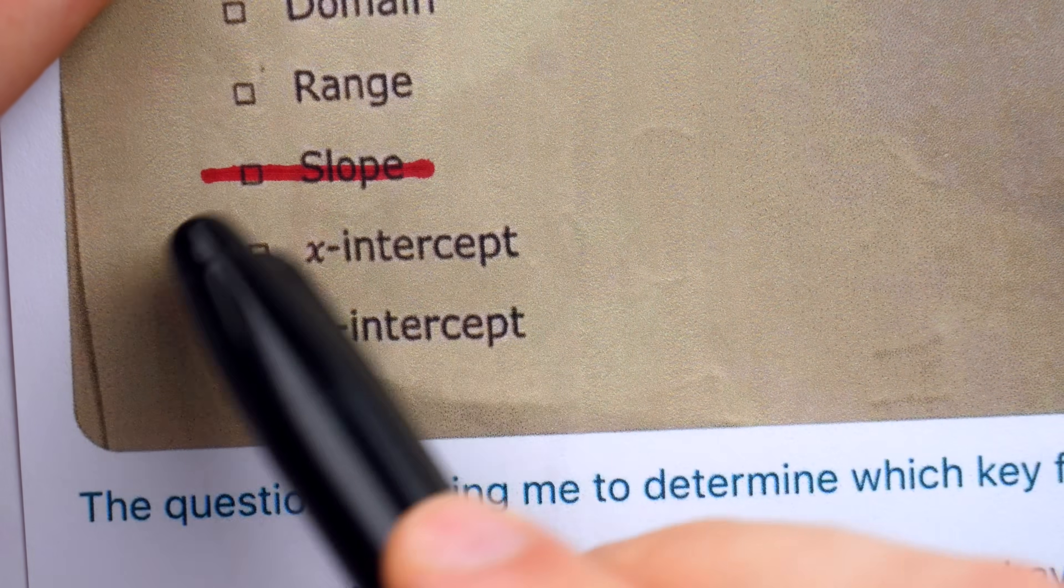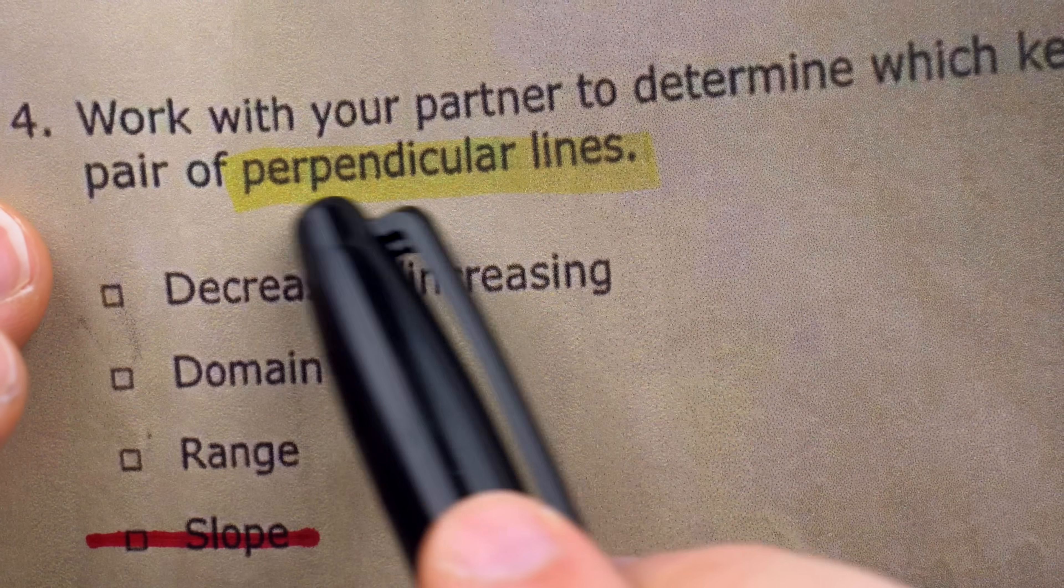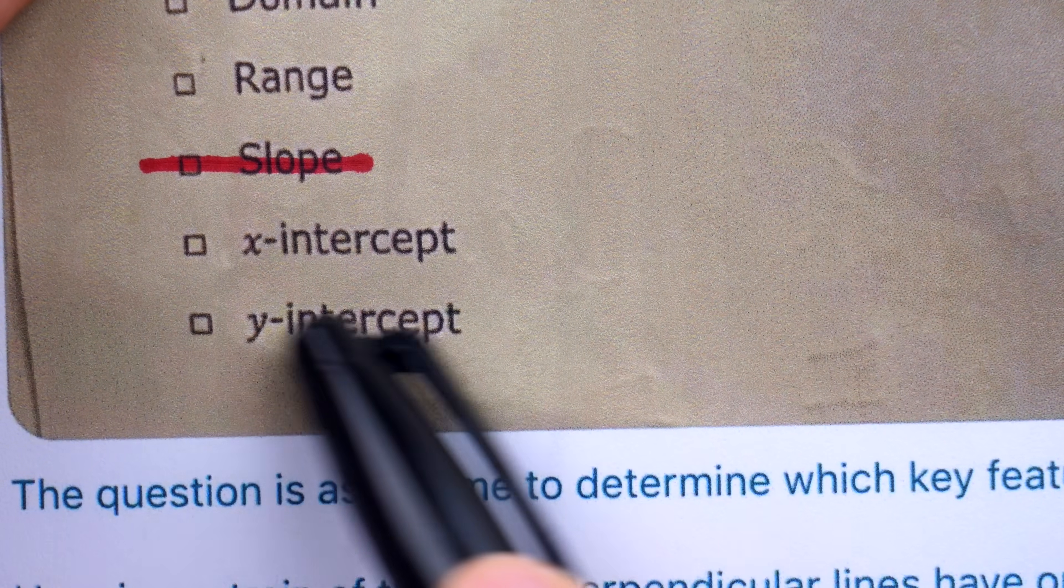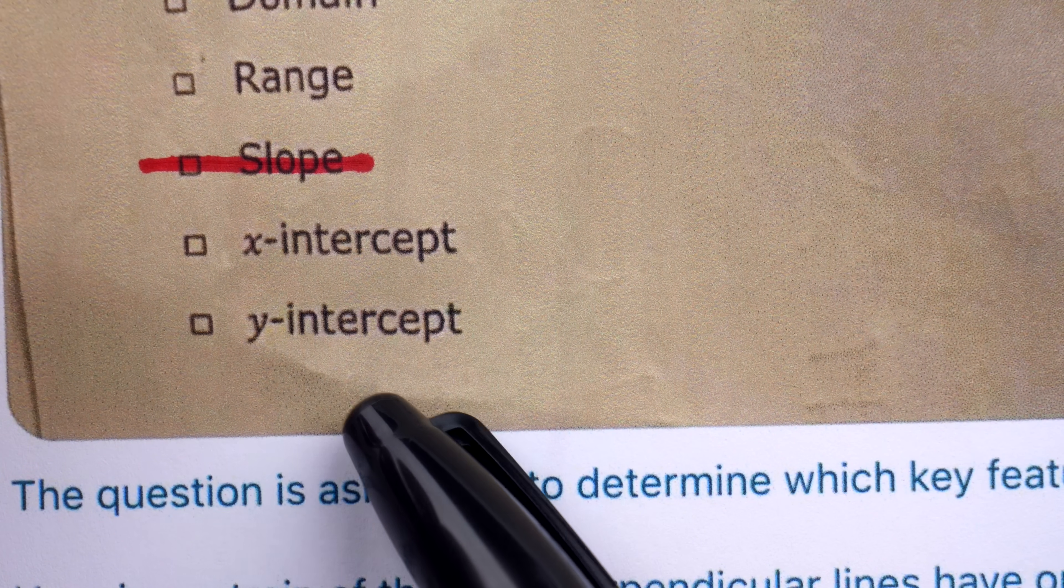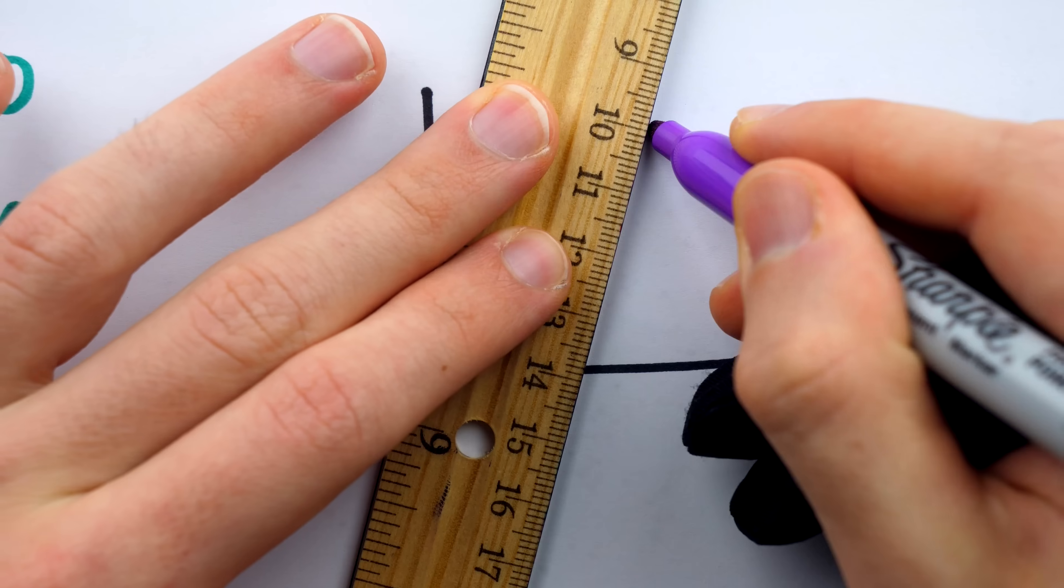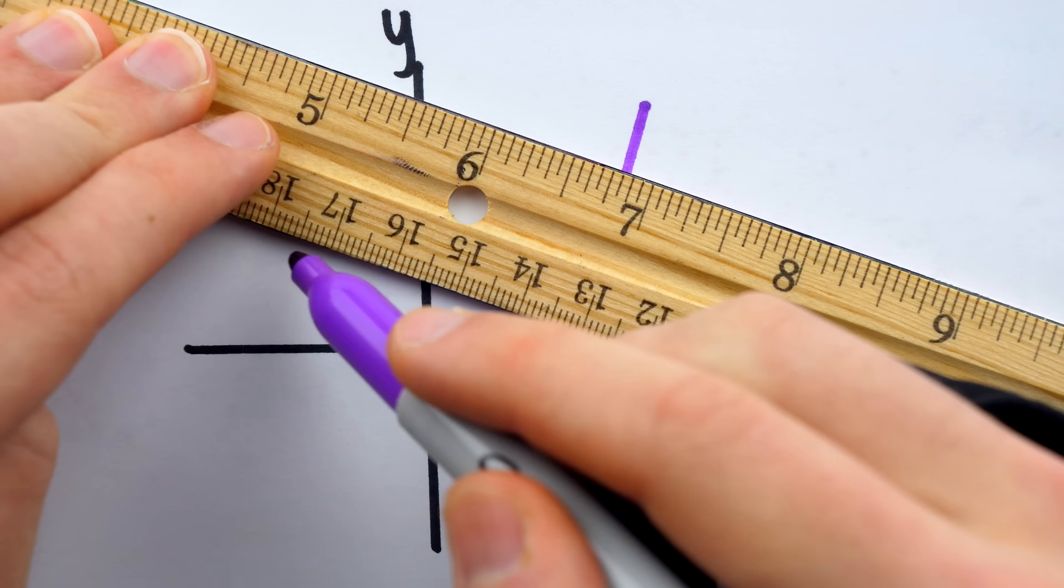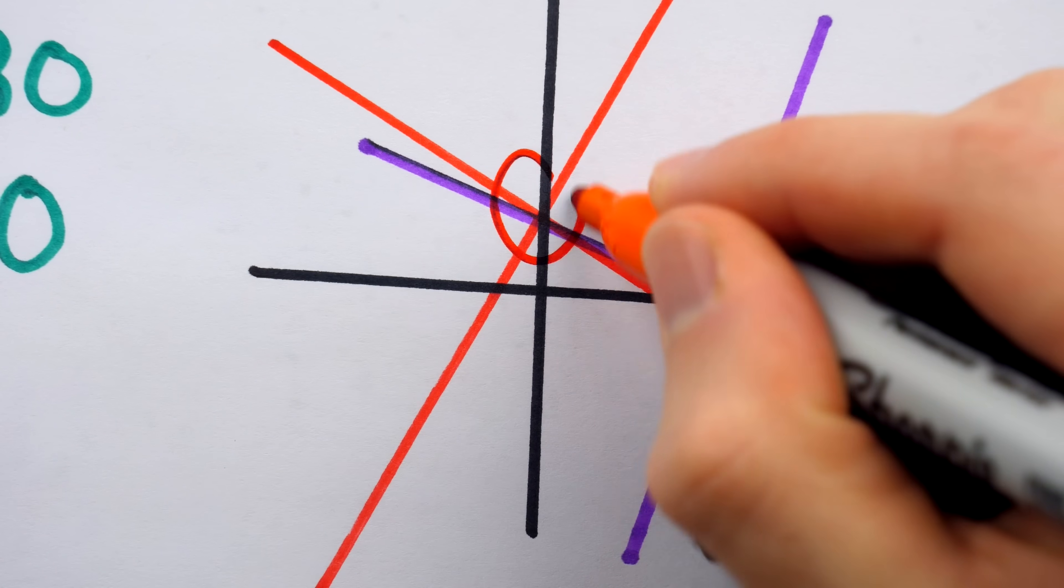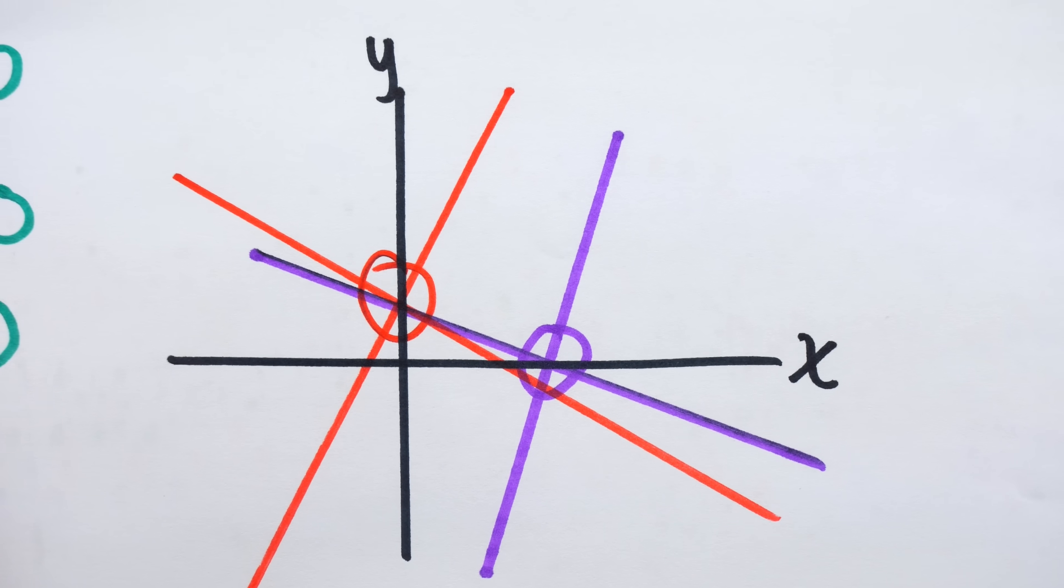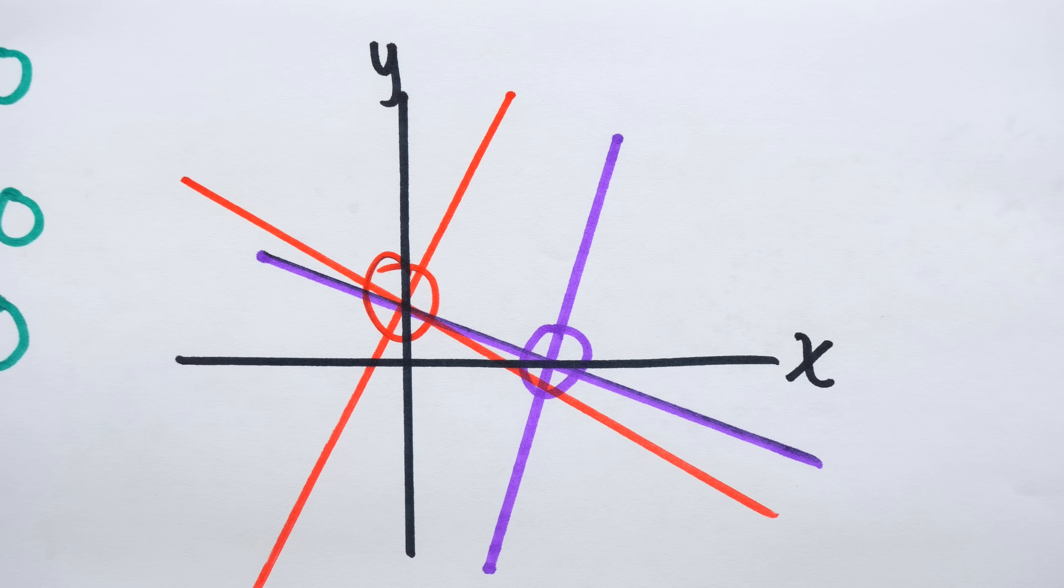Next up, x-intercept and y-intercept. Do perpendicular lines always have these in common? No, don't be ridiculous. It's possible that perpendicular lines could have the same x-intercept or the same y-intercept, but they can't possibly have both in common, and they don't have to have either in common.